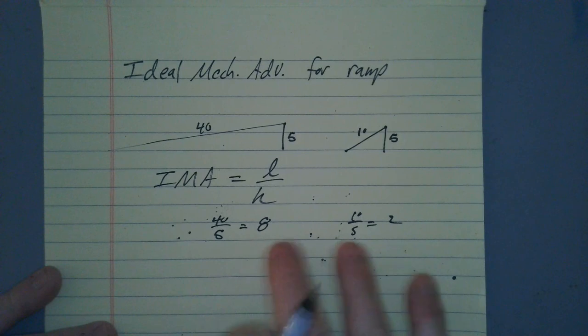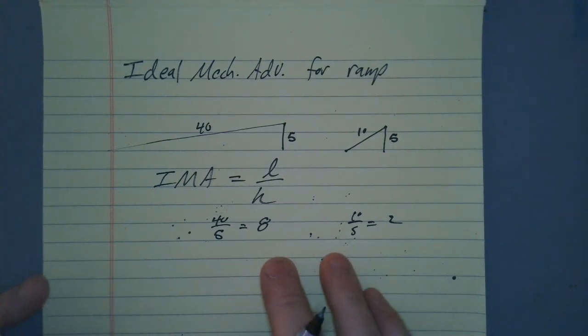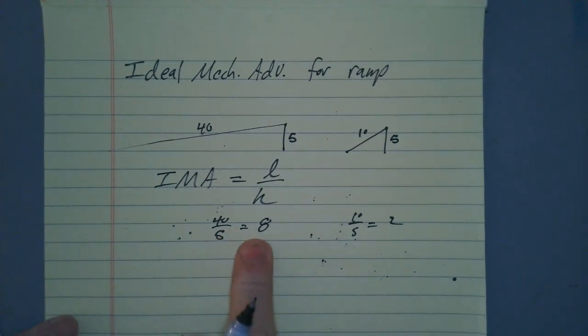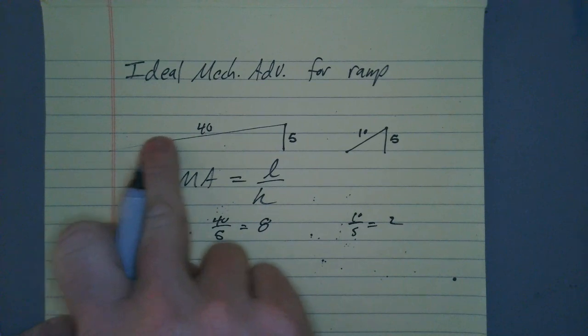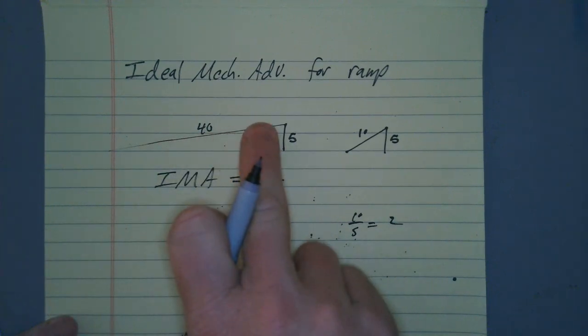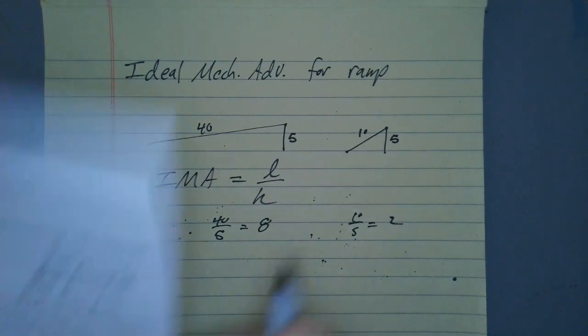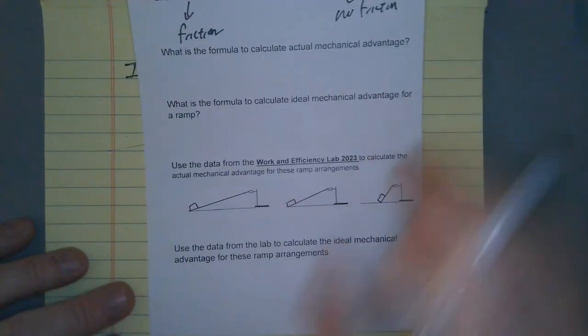Now, keep in mind, these are more like predictive kind of numbers. Like, give me an idea about how much the ramp will help me. Does it actually help me that much? No, because when I drag something up the ramp, I also have to overcome friction.